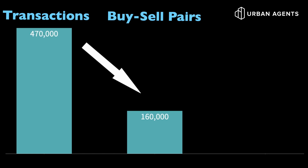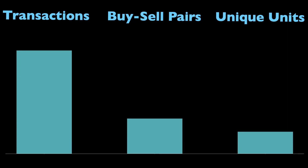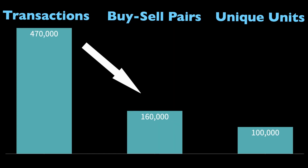How do we go from 470,000 to 160,000? Some properties have only one transaction record — the owner hasn't sold yet. Others changed hands multiple times; one unit at Clearwater in Bedok changed hands over seven times in 25 years. These 160,000 buy-sell pairs represent just over 100,000 condo units. It was a huge data cleanup effort, but now we can slice and dice the data however we want.